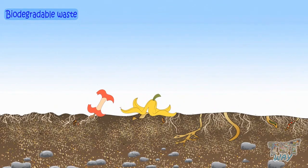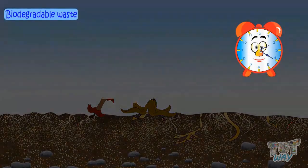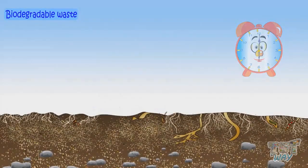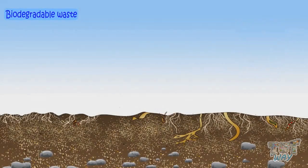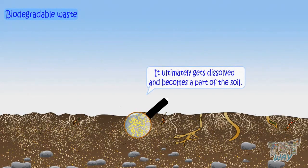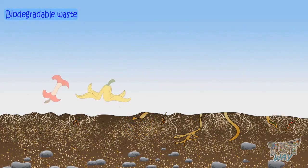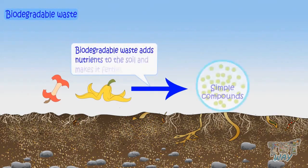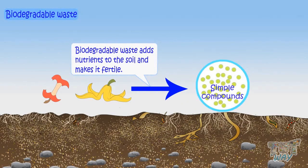For example, if you throw some food waste in the soil and let it stay there for a few days or weeks, you will not find it there anymore, as it ultimately gets dissolved and becomes part of the soil. It breaks down into simpler substances, and these simpler compounds are actually nutrients that add to the nutritive value of the soil and make the soil fertile.